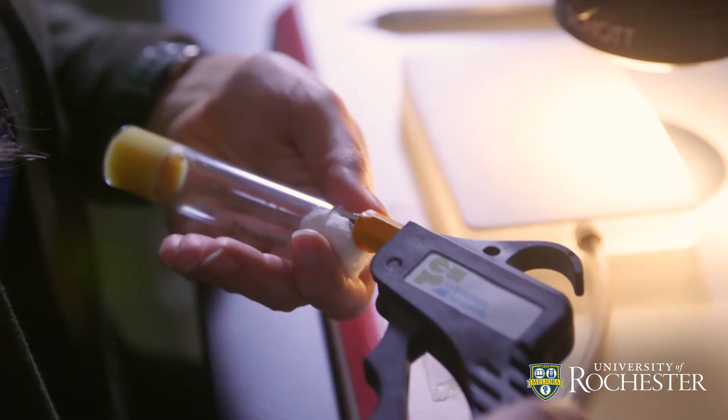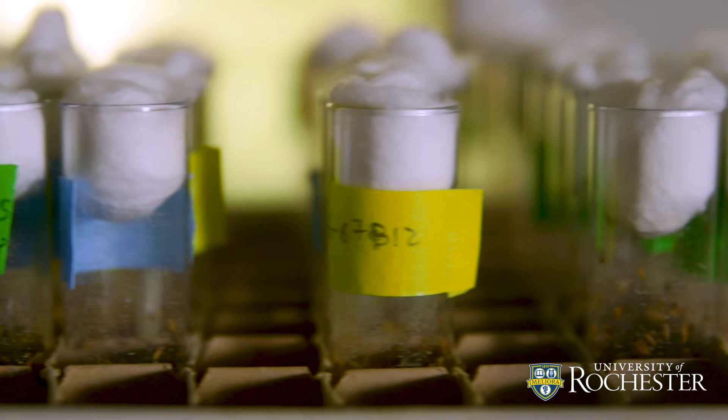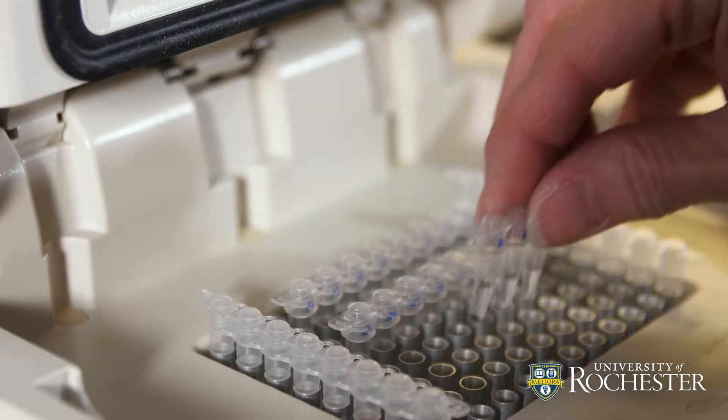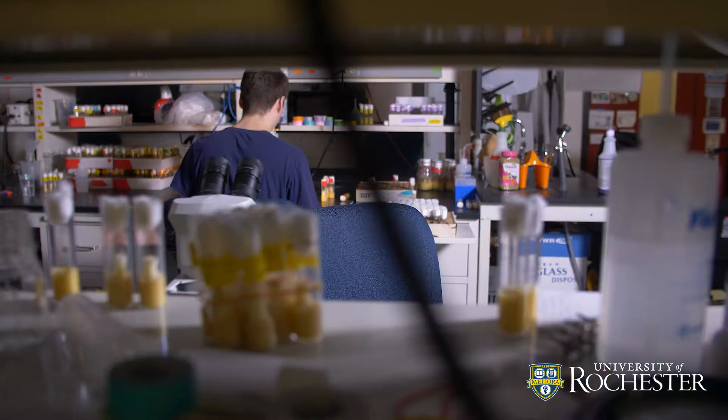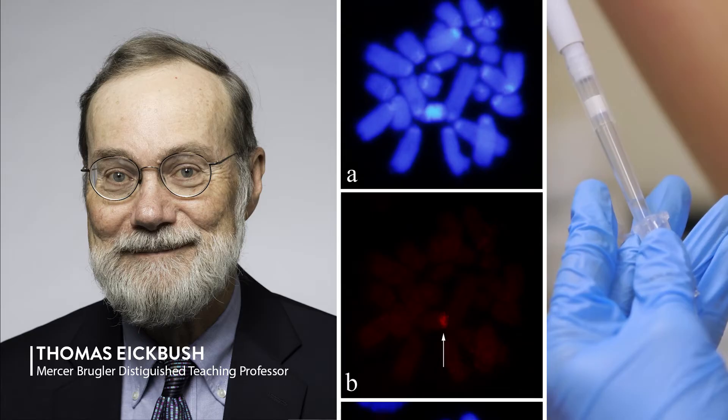For my graduate work, I studied Y chromosome evolution in fruit fly species. Most of the DNA on Y chromosomes are these selfish genetic elements, and Rochester came on my radar because it's a hot spot of research activity in this area. This work on selfish genetic elements is being done all around the world, but we remain kind of a center for this kind of work.